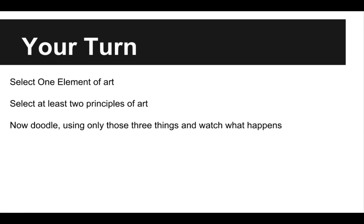What I want you to do — and this is just to have fun and start to play around with the concept — is pause this. You're going to choose one element of art, just like I chose line. Easier ones to focus on would be line, shape, form, or texture, though you could use color too. Then select at least two principles of art — if you want more, go for it. Take about 10-15 minutes and do some doodling, really focusing on using that one element and those two principles. I just want you to see what actually happens — how does it change your thought process and the end result of your doodle? When you're done, hit play and come back for the very end of this video.